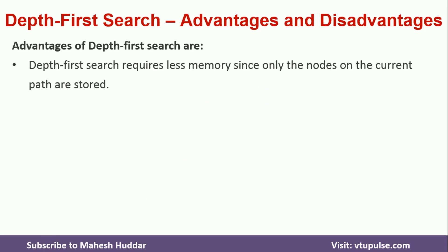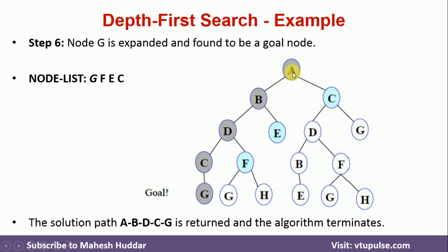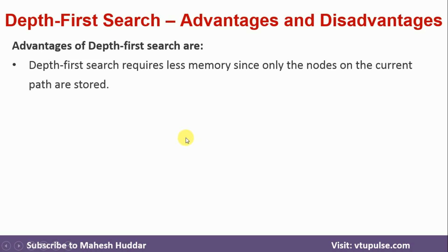The first advantage of the DFS algorithm is that it requires less memory, since only the nodes on the current path are stored. When we go from A to G, only the nodes on that particular path are saved in memory. In BFS, however, we would need to reach each and every node before the goal level. In DFS, we only visit nodes on the current path, which is the key advantage — it needs less memory.